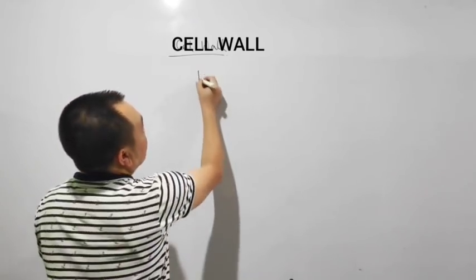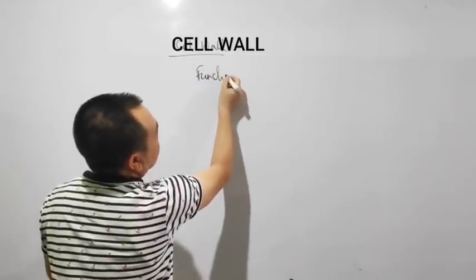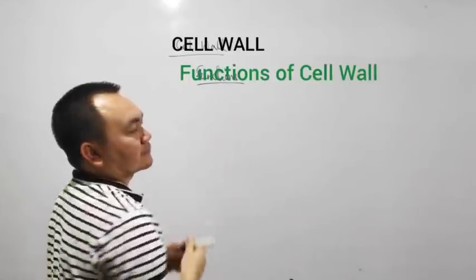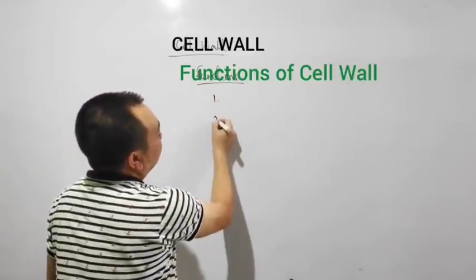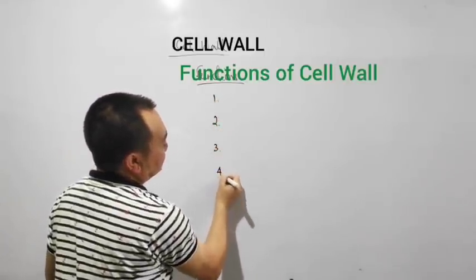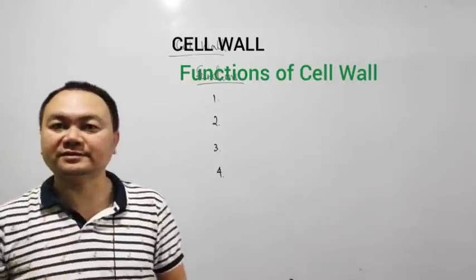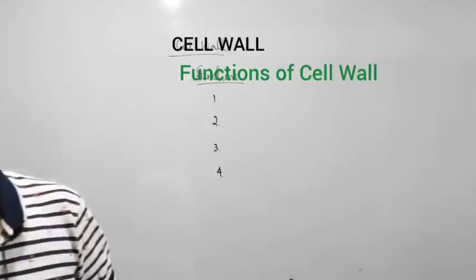First of all we will discuss the functions of the cell wall. Now in the book there are four functions given. The first function, let me give you an explanation.